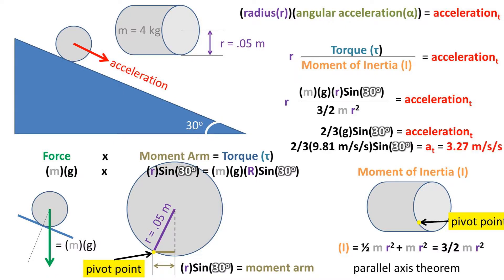Plugging in our acceleration due to gravity of 9.81 meters per second per second, we get an acceleration of 3.27 meters per second per second as the acceleration of the cylinder down the ramp.